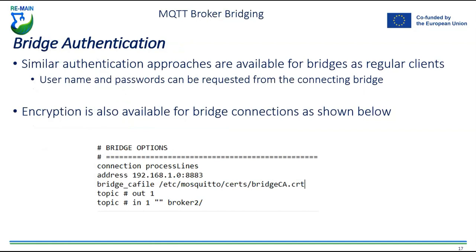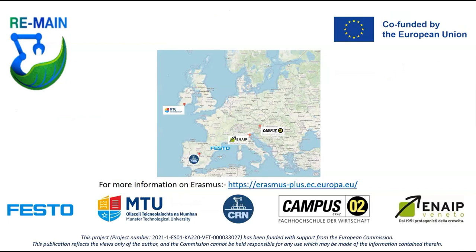Similar authentication approaches are available for bridges as for regular clients — username, passwords, and encryption. You can see an example of how that might be configured by adding a CA file into your bridge options. That's a quick overview of bridging. If you're setting something like this up, work with your OT team, IT team, and process team, and work carefully with the user guides and maintenance guides for the broker software you're using. This presentation was brought to you under the REMAIN project, co-funded by the European Union under Erasmus+.